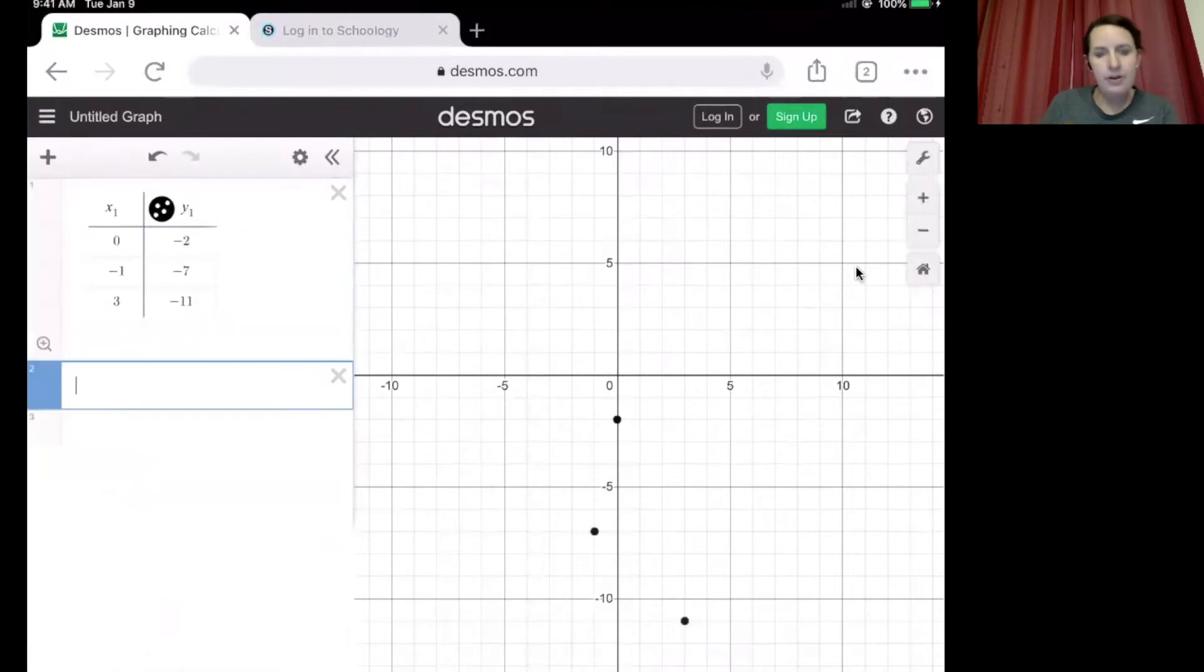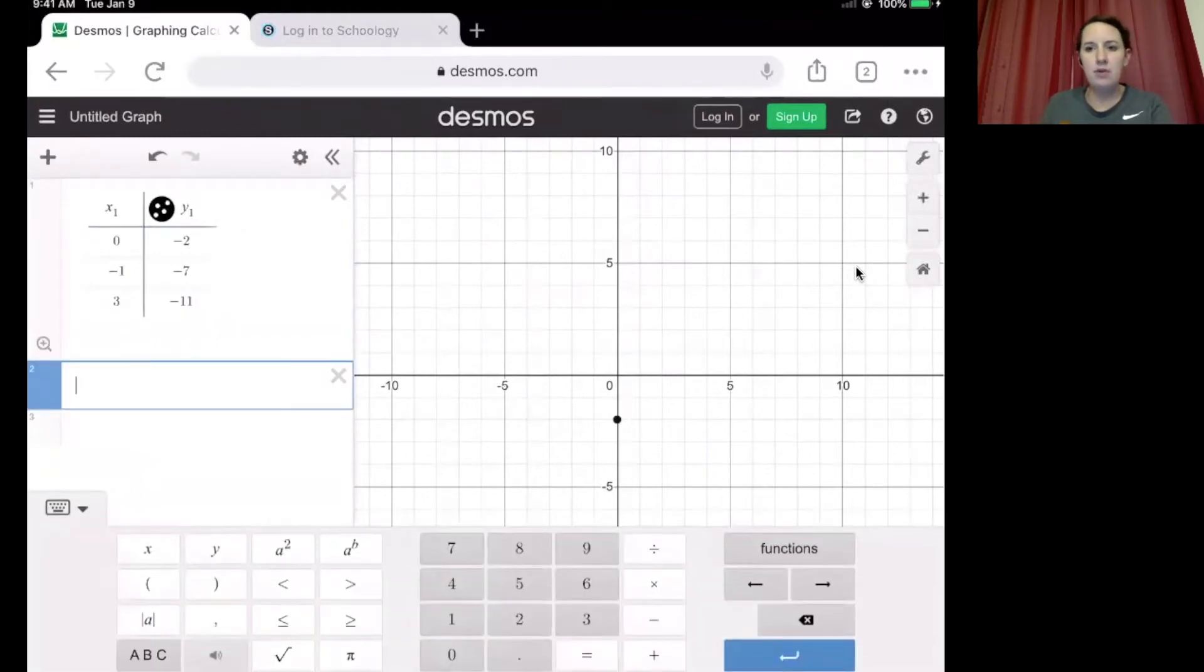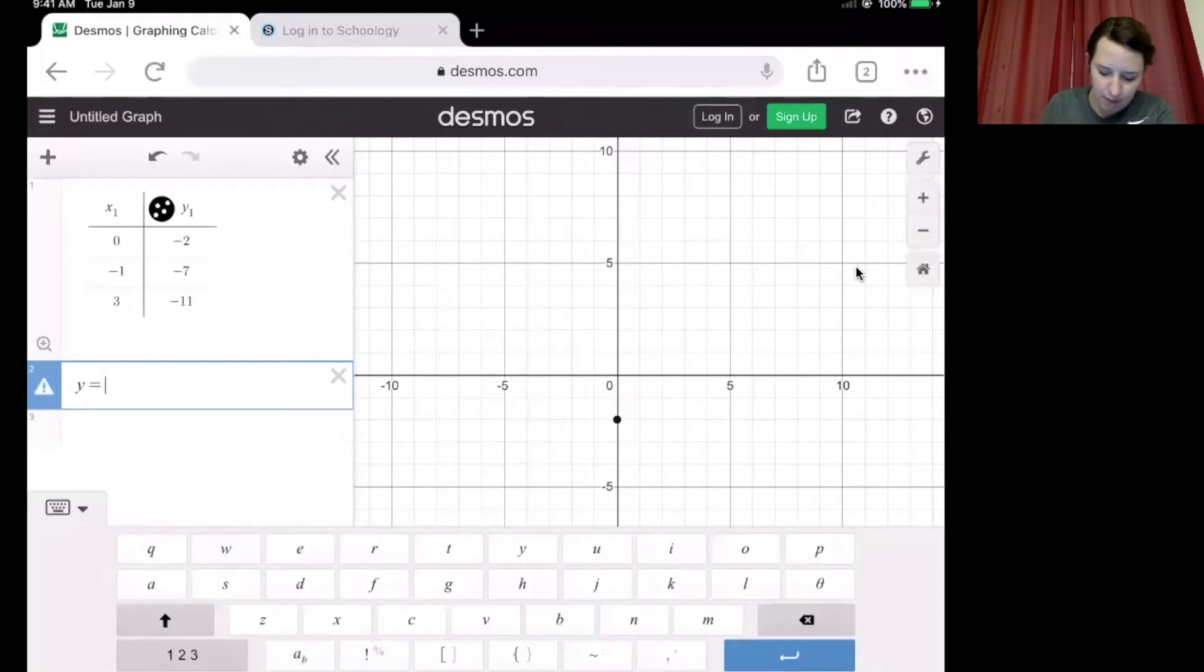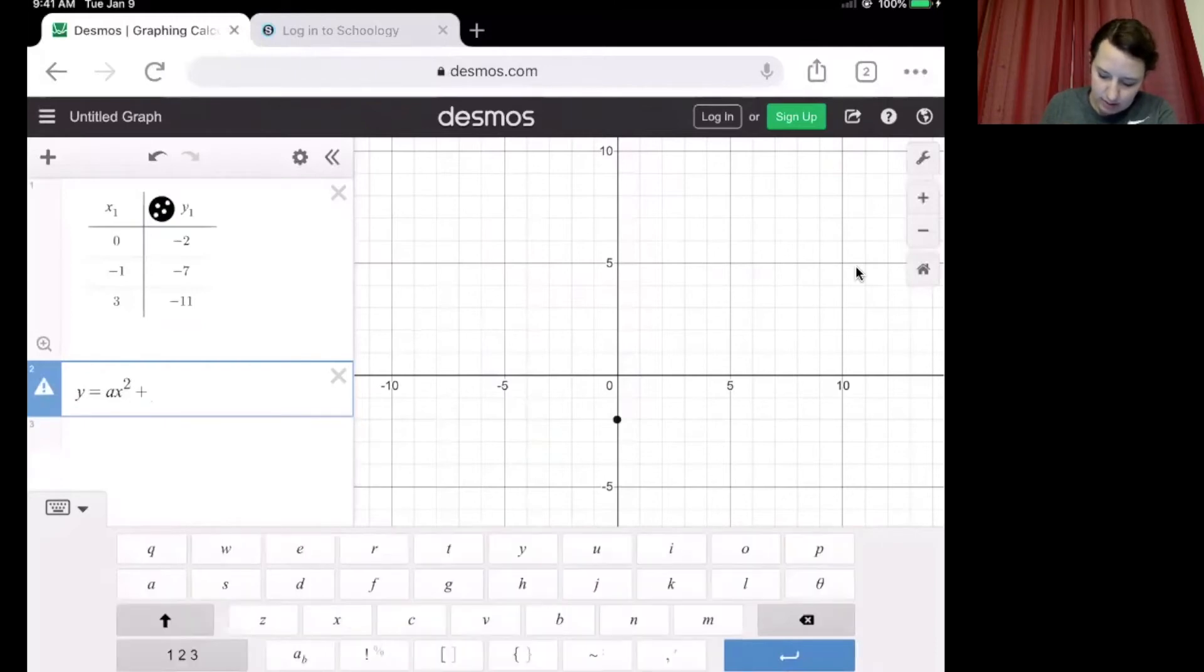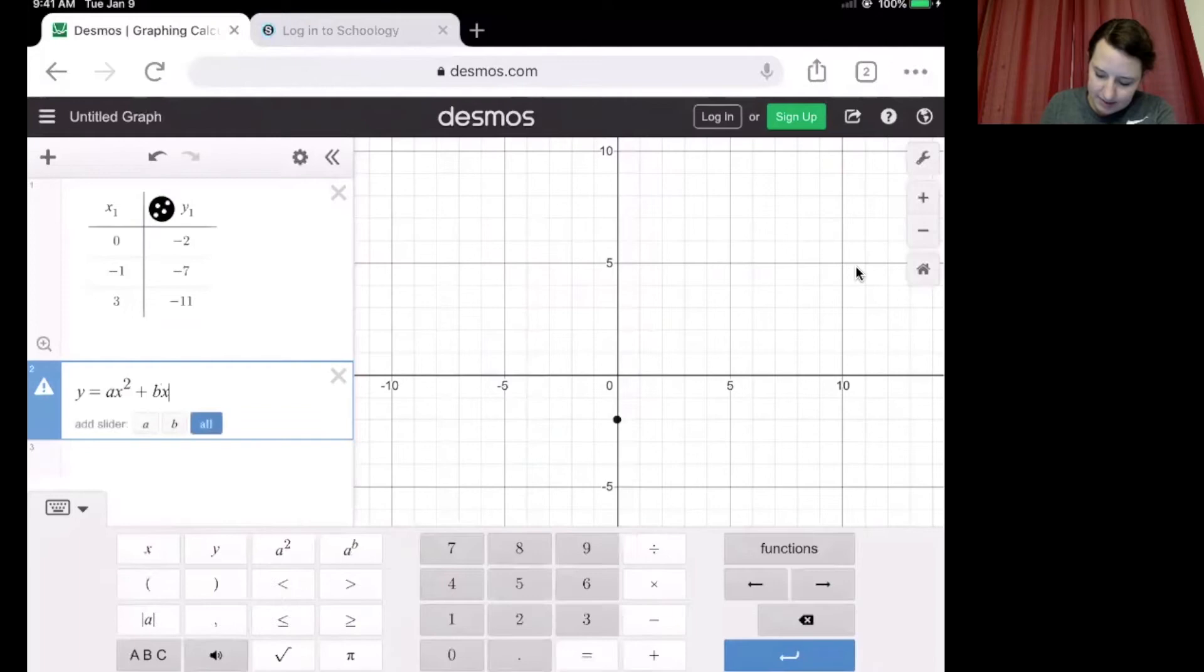And then in the second line over here, we're going to go ahead and type the standard form of our quadratic. We're going to have to go back and make a couple of changes to it, but I find it easier just to type out the whole entire standard form before we make those changes. So y equals ax squared plus bx plus c.